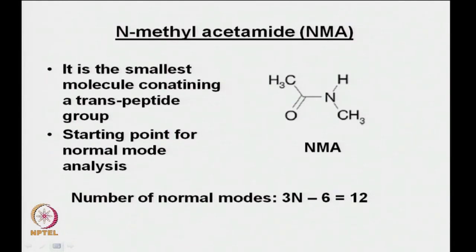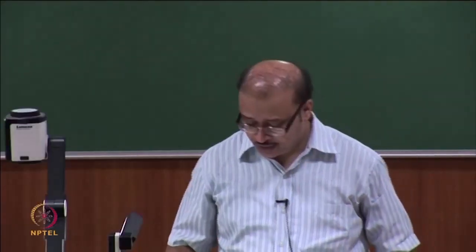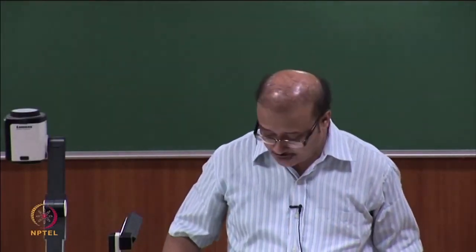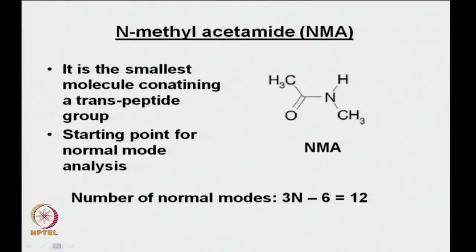For N-methylacetamide, the number of normal modes is given by 3N − 6 = 12. The 6 comes from 3 translational modes (x, y, z) and 3 rotational modes (x, y, z). N is the total number of atoms. So N-methylacetamide has 12 normal modes.